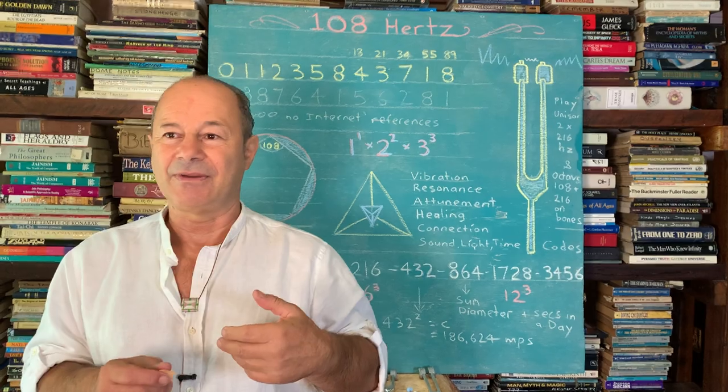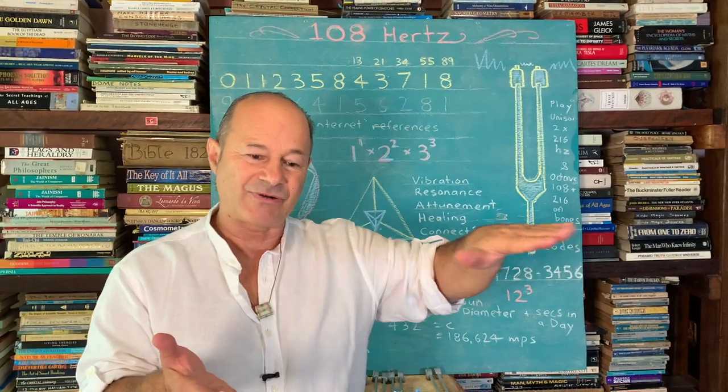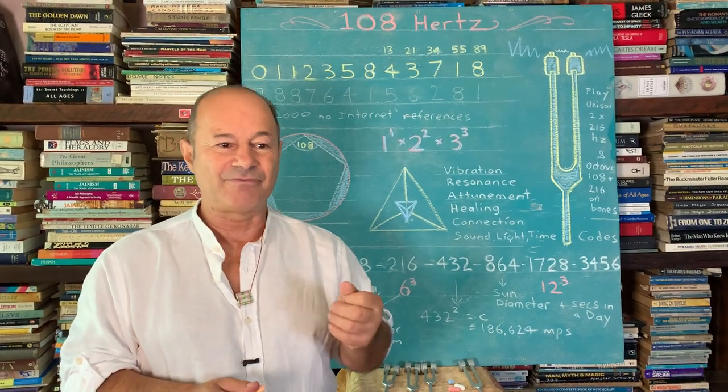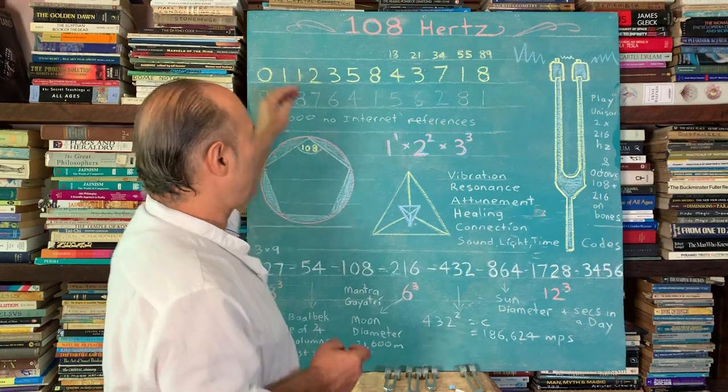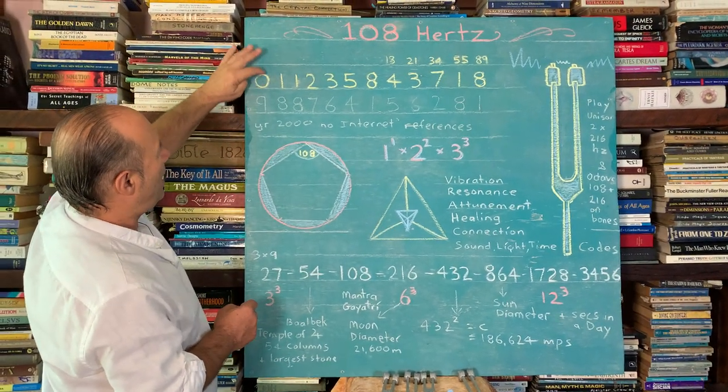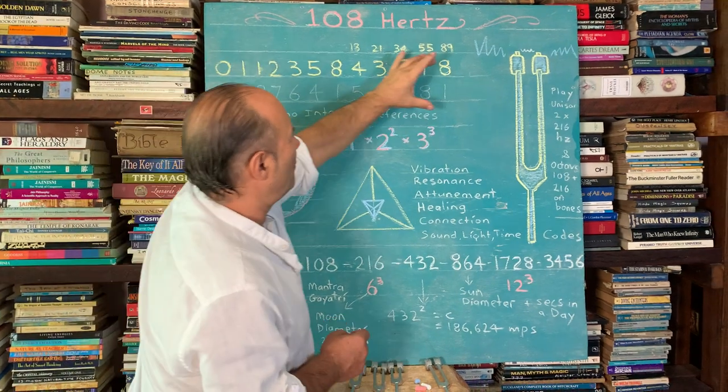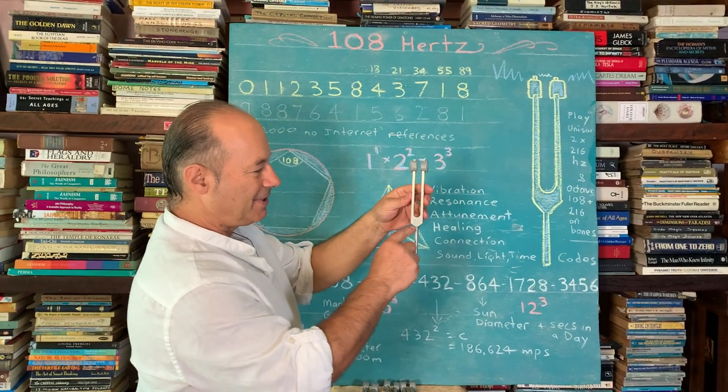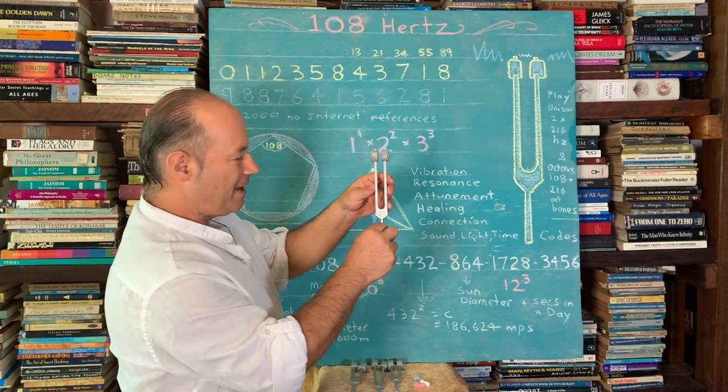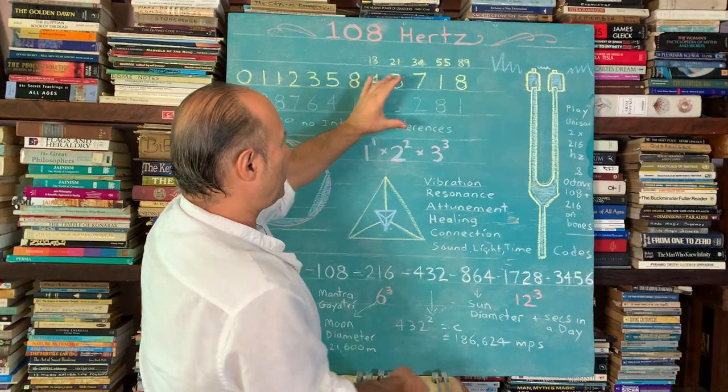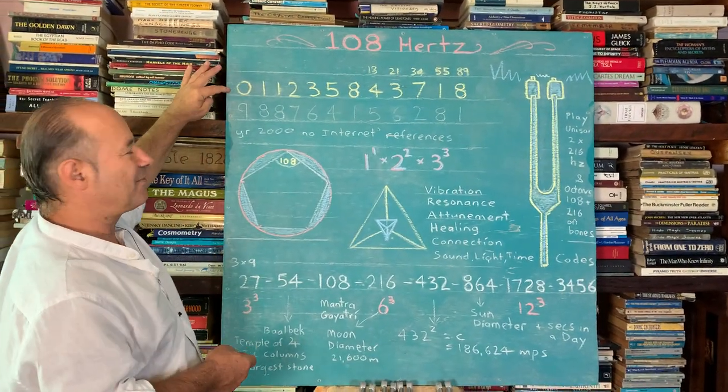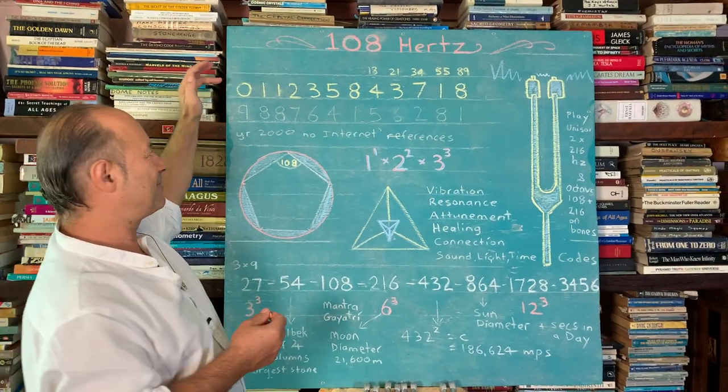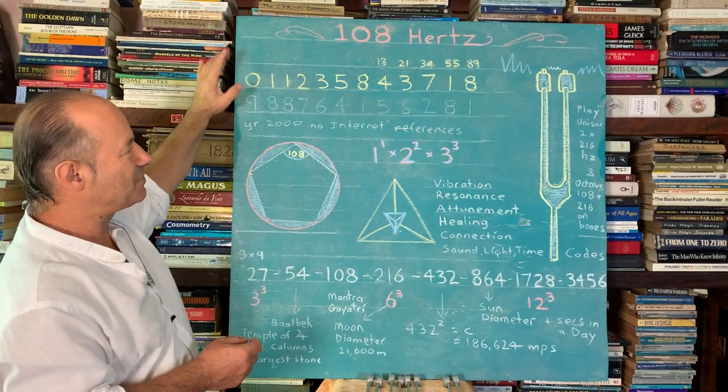Why is 108 important? It's the mathematics of nature. If we look inside an apple and do a transverse cut, you'll see it's a five-pointed star. The mathematics of nature is governed by the Fibonacci sequence. Normally we start with 1, but I want to retain the 108 code, so I'm starting with 0 for a special reason.